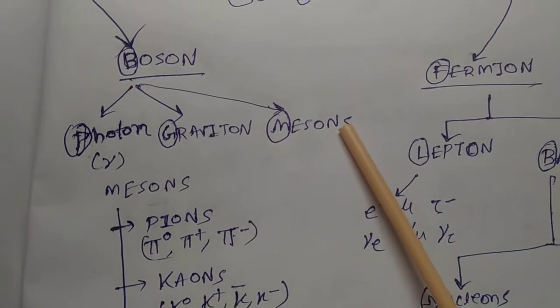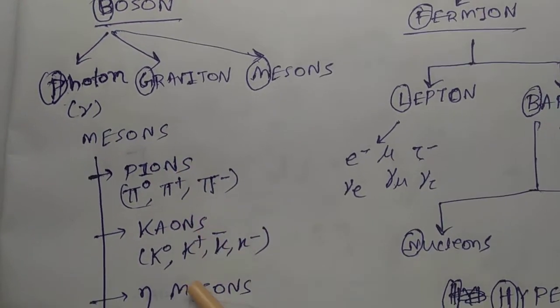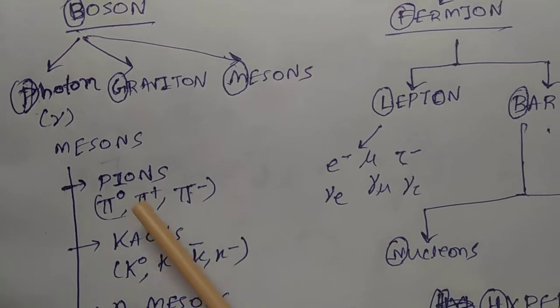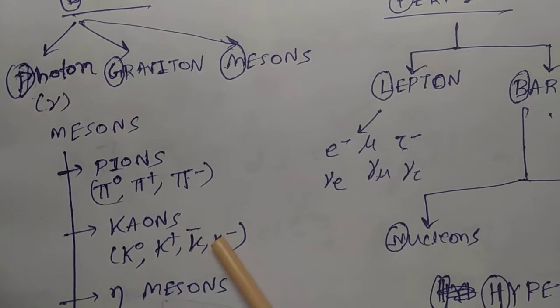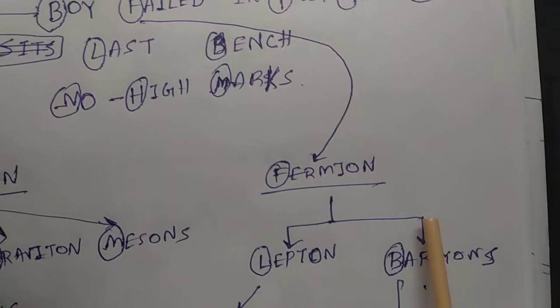Mesons: there are pions, kaons, and eta mesons. Pi plus, pi minus, pi zero, eta meson, K plus, K minus, K bar. For fermions, there are two types of classification.